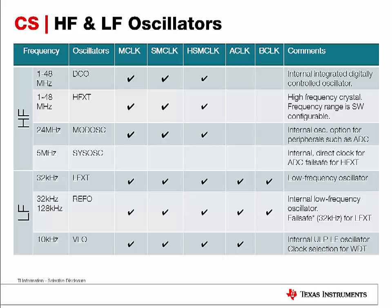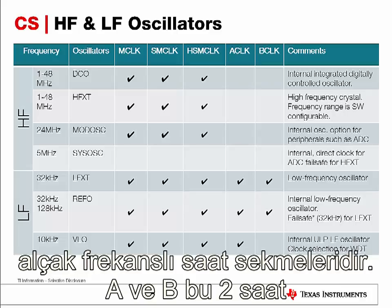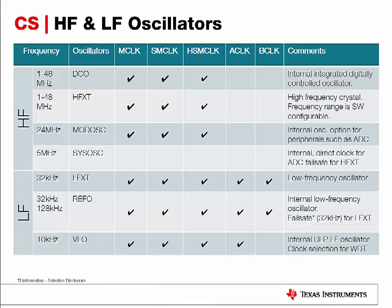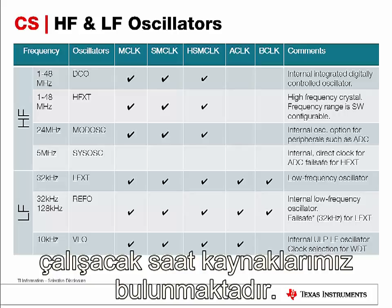There are two additional clock tabs on the MSP432: ACLK and BCLK. These two particular clocks are especially useful in low-frequency and low-power mode, since they are optimized for ultra-low-power consumption. ACLK and BCLK can operate anywhere from 128 kHz all the way down to 10 kHz.